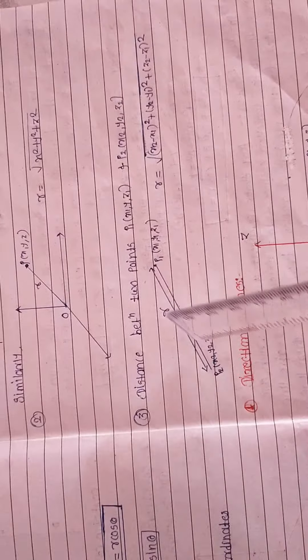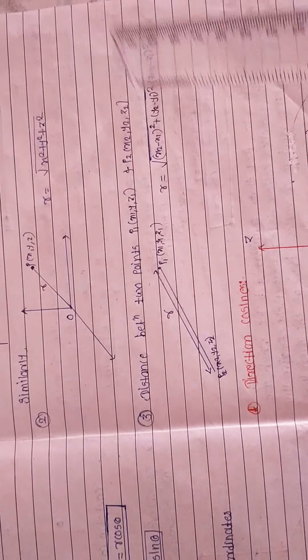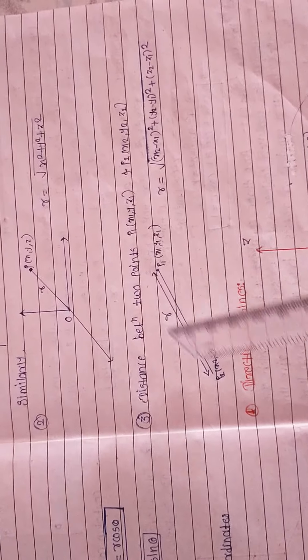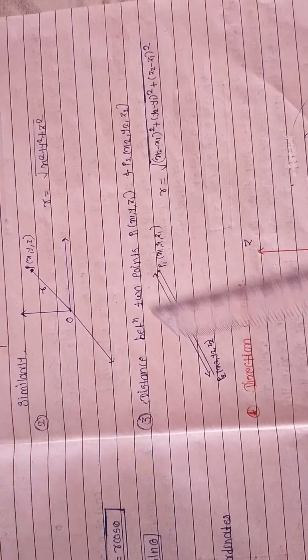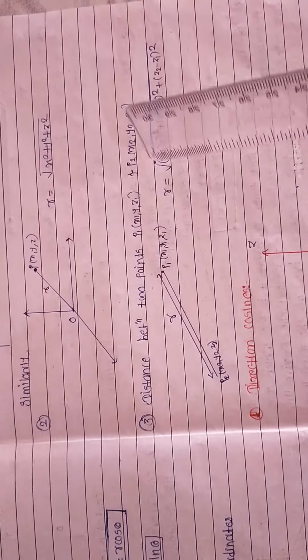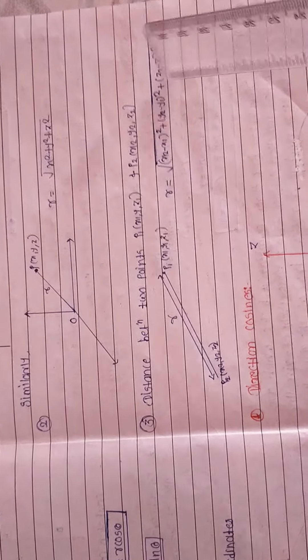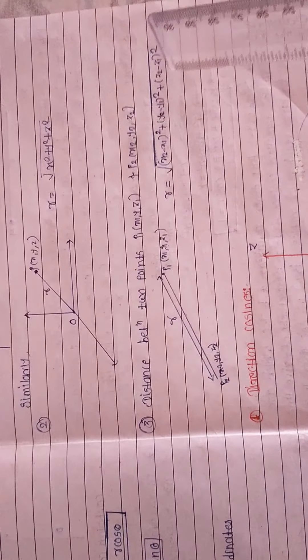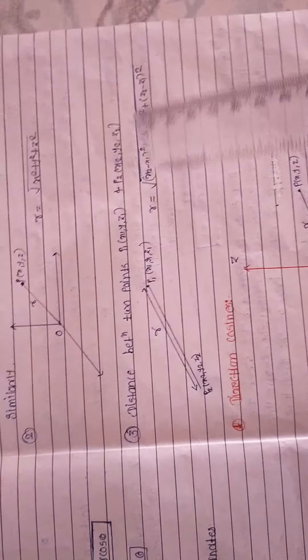Now let us extend this concept to an arbitrary point. Suppose we have two points P₁ with coordinates (x₁, y₁, z₁) and P₂ with coordinates (x₂, y₂, z₂). The straight-line distance between these two points is r = √[(x₂ − x₁)² + (y₂ − y₁)² + (z₂ − z₁)²]. Note that it doesn't matter whether you take x₂ − x₁ or x₁ − x₂, because you are squaring, so the distance will not change.